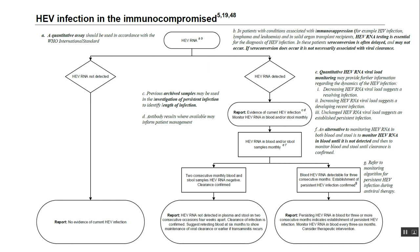If your RNA viral load is decreasing, it indicates a resolving infection. If it is increasing, it suggests the patient is developing or progressing in a recent infection. If it remains unchanged, it indicates an established or persistent infection.